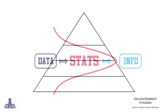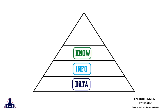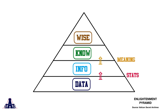Now why is that important? If we look at the enlightenment pyramid, we see that we have data at the bottom, then information, then knowledge, and then wisdom. In order to get from data to information we need to process it through statistics. To get from information to knowledge we need to give it meaning, and to get from knowledge to wisdom we need judgment. But statistics is only dealing with data to information.